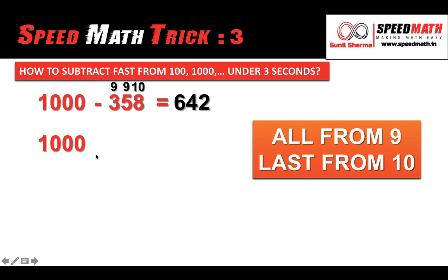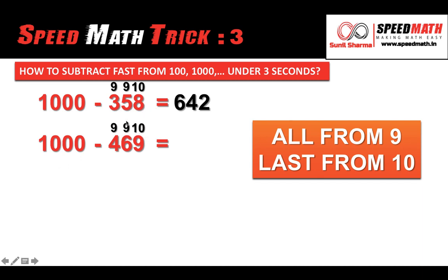Let me take one more example. Let's say you want to subtract 469 from thousand. The rule is the same — all from 9 but last from 10. Subtract the first two digits from 9 and the last from 10. So: 9 minus 4 is 5, 9 minus 6 is 3, 10 minus 9 is 1. The answer is 531.